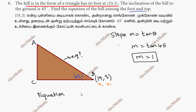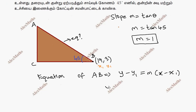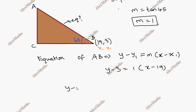Now the equation of AB: y minus y1 equals m into x minus x1. Substituting, y minus 3 equals 1 into x minus 19.